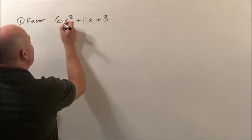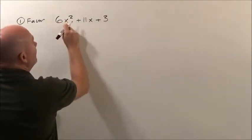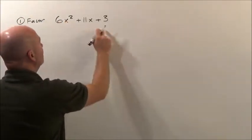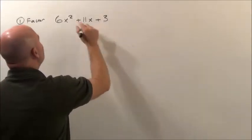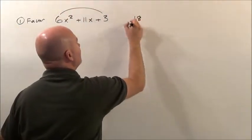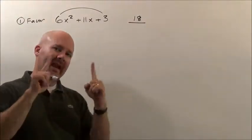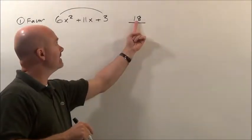You take this value in front of x², which we call the a value. The 3 is the c value. We multiply these, which gives us 18. So we multiply the a and c values, which gives us 18.